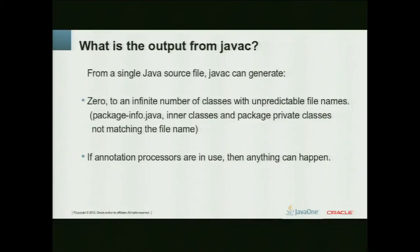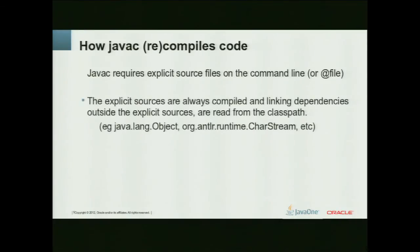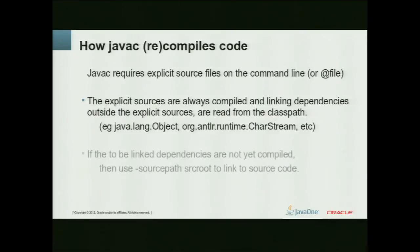The next result is you don't know what's going to happen when you run JavaC. JavaC requires explicit source file names on the command line, and usually you put a lot of source files into an at-file. These explicit sources are always compiled and linked against the dependencies outside of it — for example, the class path where you pick up the object class and other things. If you need access to code that has not yet been compiled, you need to use the source path argument to JavaC.